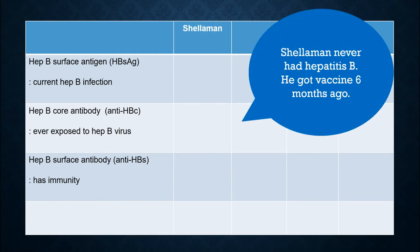For this case, the person named Shalaman has never had hepatitis B and got the vaccine 6 months ago. The person had a vaccine, which means he has immunity. The last part of the result is positive. However, he has never had the virus before, and he doesn't have the virus now. So the result goes like this for Shalaman.